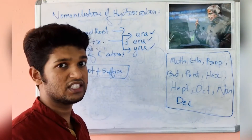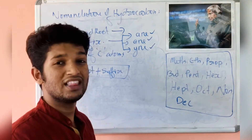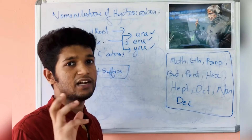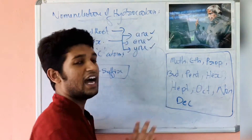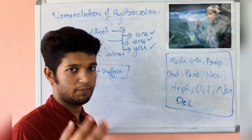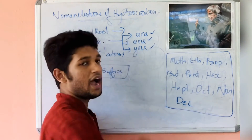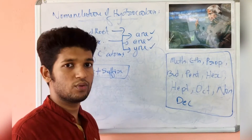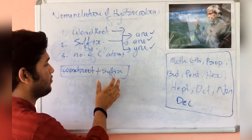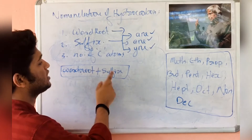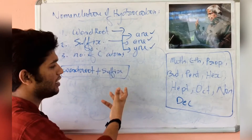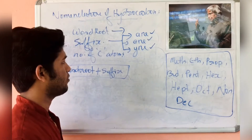The suffixes are chosen according to the bond between the carbon atoms. If it is a single bond, we will take 'ane'. If it is a double bond, we will take 'ene'. If it is a triple bond, we will take 'yne'. The generalized equation to name a compound is: word root plus suffix. So if you know the word root and the suffix, you can easily name a hydrocarbon.